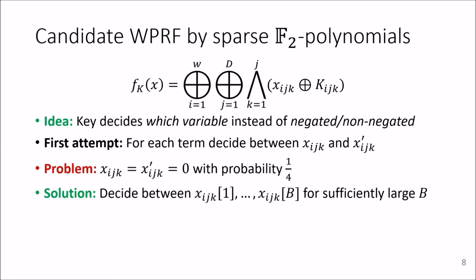And now the solution is also still quite straightforward. You can circumvent this by not choosing between two, but by choosing between sufficiently many, then that all of them are zero will happen only with very small probability.